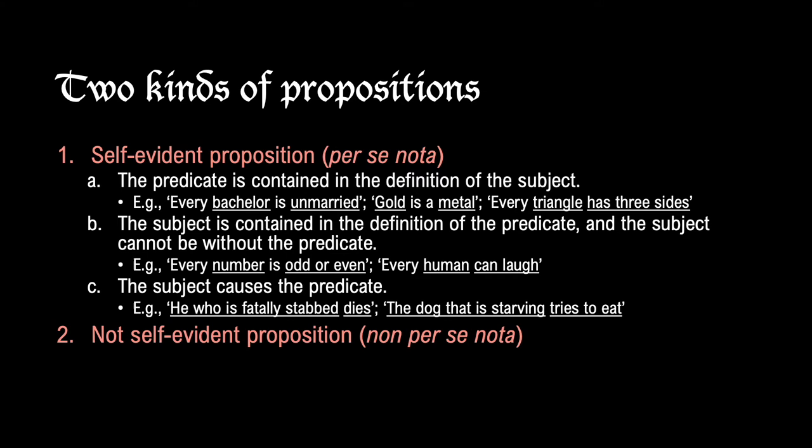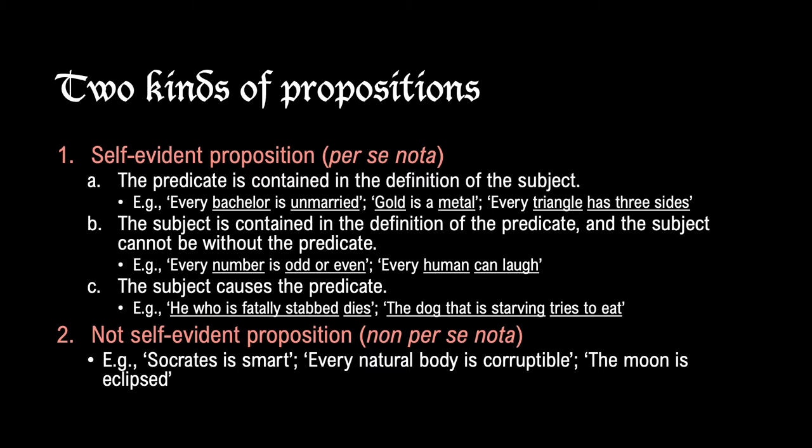Here are some examples of non-self-evident propositions: 'Socrates is smart,' 'every natural body is corruptible,' and 'the moon is eclipsed.' These are all non-self-evident propositions because they are either contingently true, or because they must be proved from something prior which is self-evident. Propositions which are false would also be non-self-evident.